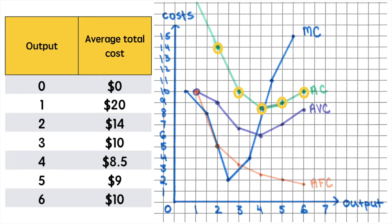This is seen directly in the shape of the average variable cost curve. Beyond the efficiency point average variable costs start to rise. We also have to consider the average fixed cost.